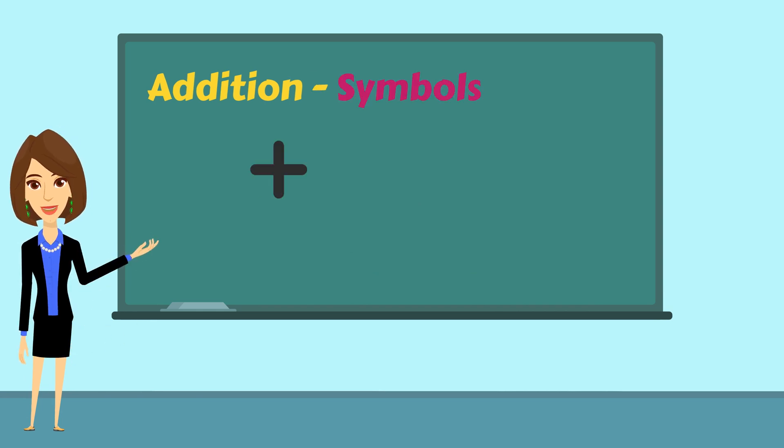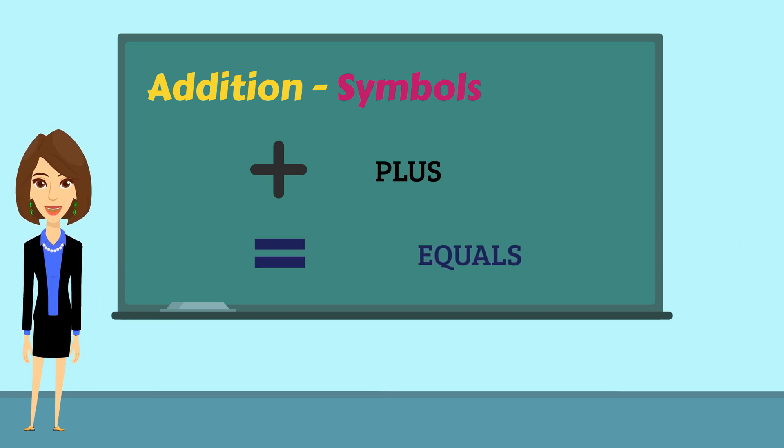Symbols used in addition. A plus sign indicates addition and it means that the numbers should be added. The equal sign describes equality between the values, equations or expressions written on both sides.